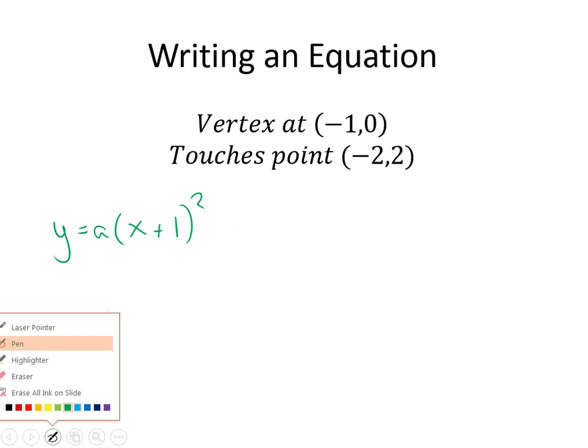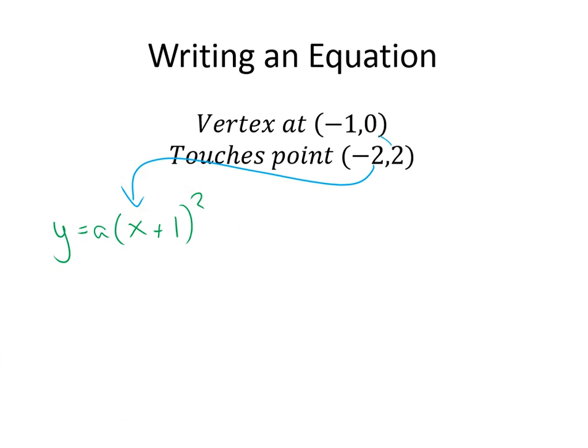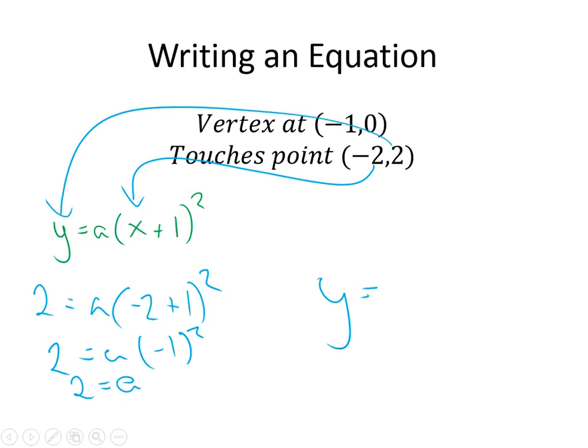And now what we're going to do, we're going to plug in negative 2 in for the X and 2 in for the Y and then solve for A. So we'll have 2 is equal to A parenthesis negative 2 plus 1 squared gets you a negative 1 squared is equal to A, 2 gets you A equals 2. So that means our final function is going to be Y equals 2 parenthesis X plus 1 squared. And there's our equation.